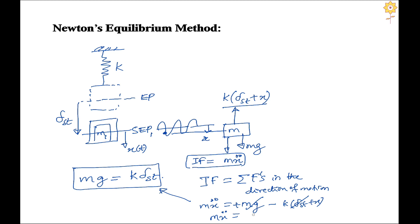From this we have M x-double-dot plus kx equals zero. This is the differential equation of motion for the mass. Note that you can equivalently show the accelerating force (M x-double-dot pointing toward the mean) and equate upward and downward forces — you arrive at the same equation. Both approaches — using the accelerating force or the inertia force — are equivalent.